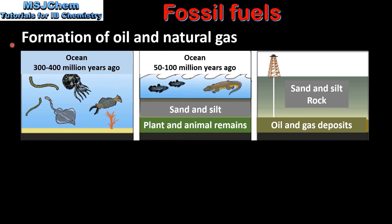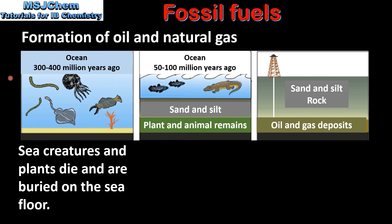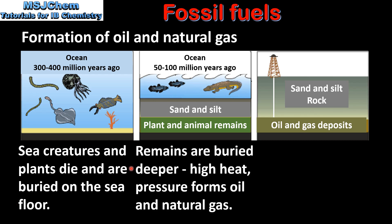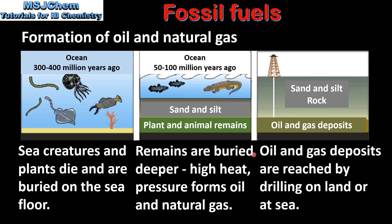Next we look at the formation of oil and natural gas. About 300 to 400 million years ago, sea creatures and plants died and were buried on the sea floor. The remains were buried deeper, and conditions of high heat and pressure formed oil and natural gas. The oil and gas deposits are reached by drilling on land or at sea.